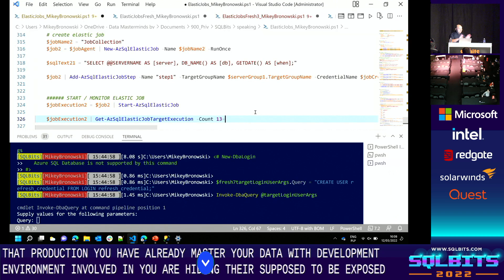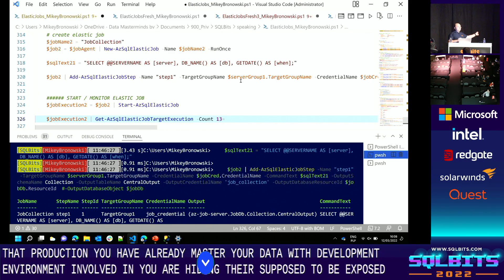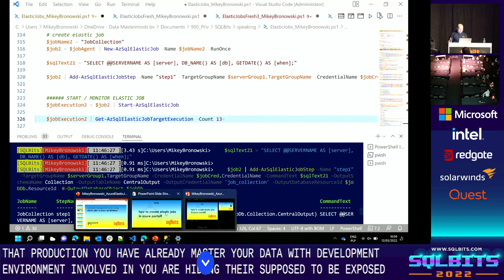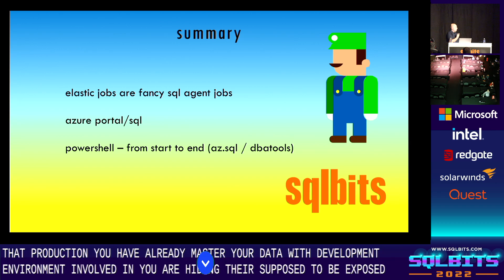If you want to do this fully scripted in one go, there's a PowerShell option. I have a script — if I run it and come back in 10 minutes, everything is already set up and tested. That concludes the demo. In summary: elastic jobs are essentially fancy SQL Agent jobs with extra features. You can create the agent in Azure Portal, but you need an additional tool — T-SQL in Management Studio, or PowerShell using the az.sql module or the open-source dbatools module.